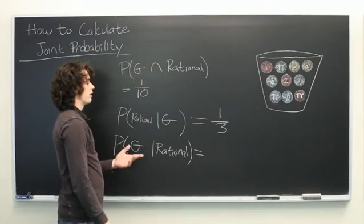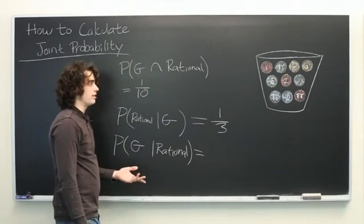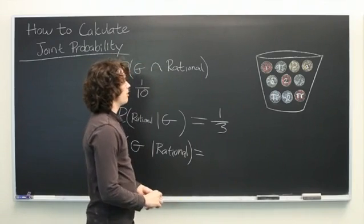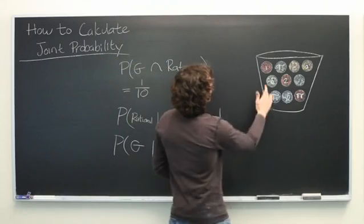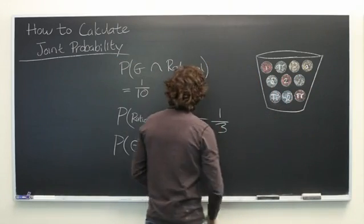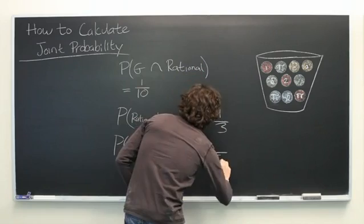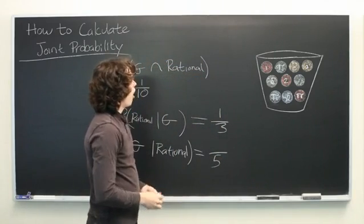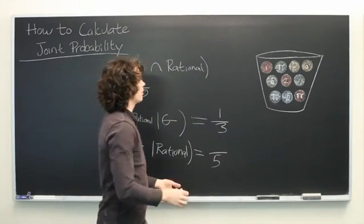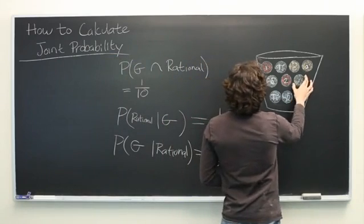Again, the denominator of this fraction is not going to be 10, but instead is going to be the number of rational balls. So, 1, 2, 3, 4, 5. Of those 5, how many are green? Well, just this one again.